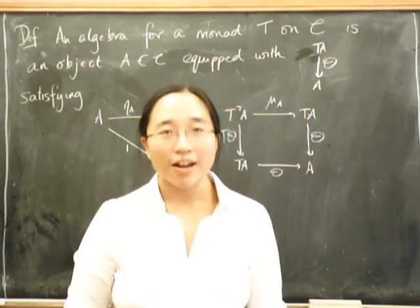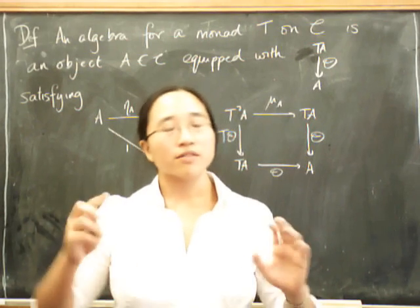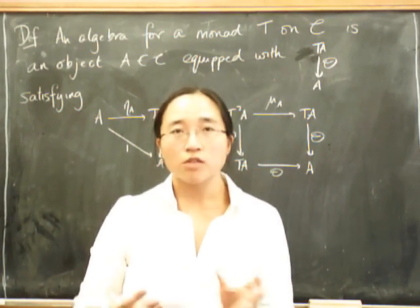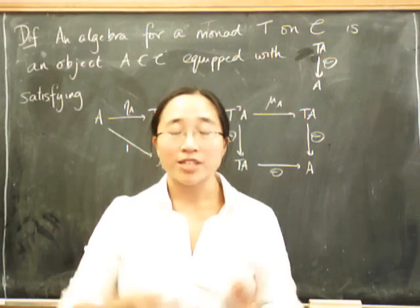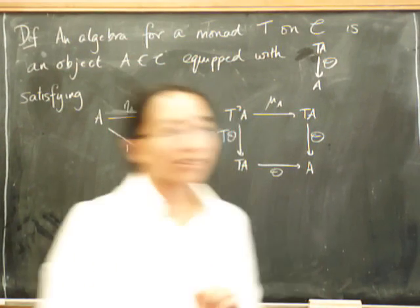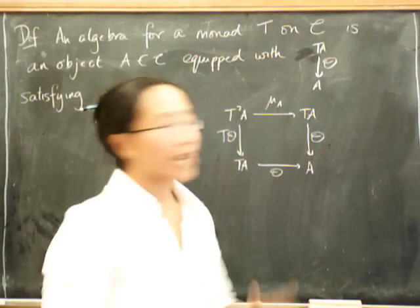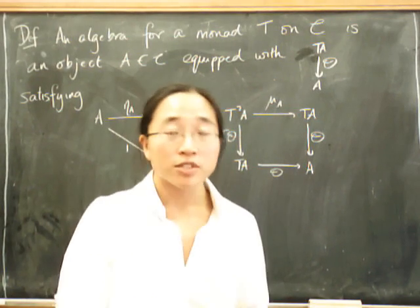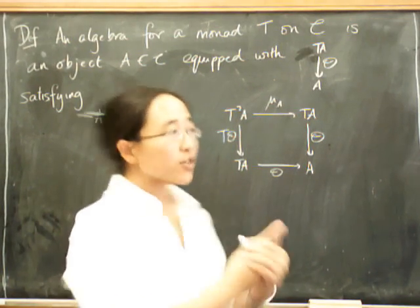Today we're going to carry on talking about algebras for a monad. Now, last time we were very bad categorists because we defined this thing called algebras, but we didn't put them into a totality. And one of the things we like doing as categorists is considering totalities of things. So, as you might have guessed, algebras for a monad form a category.